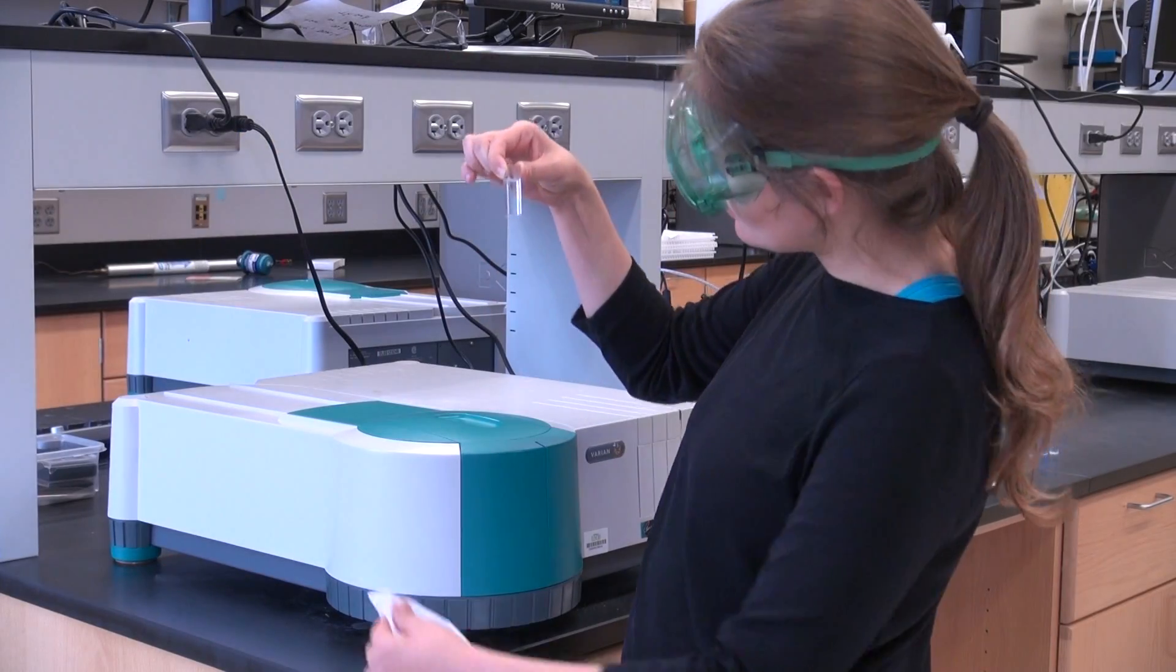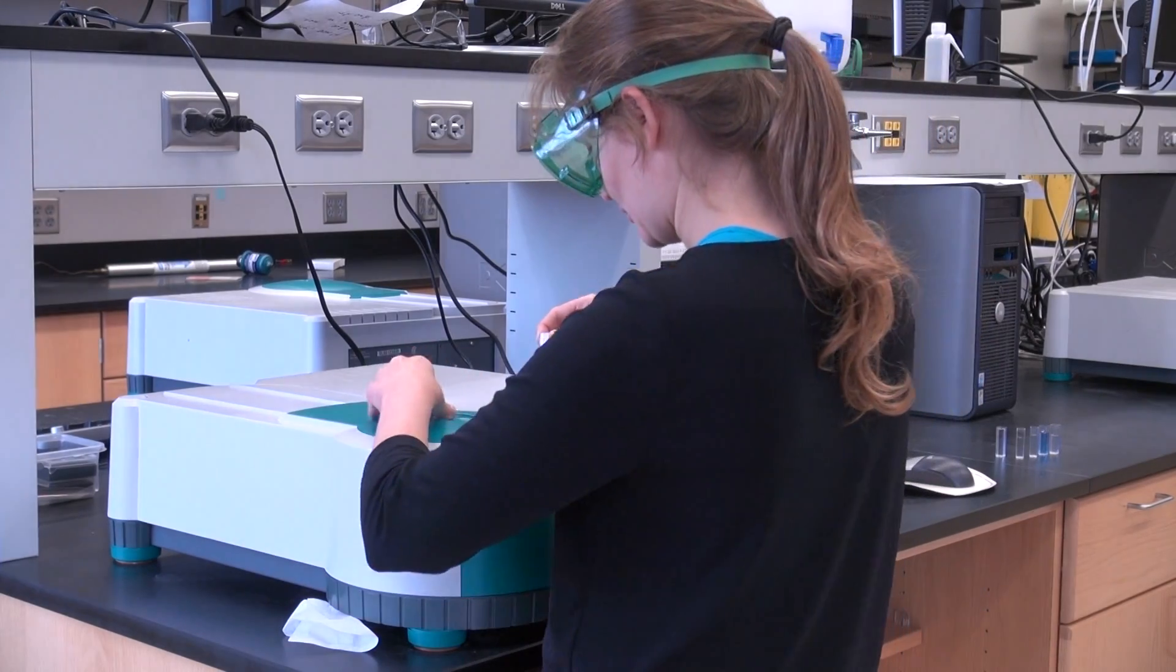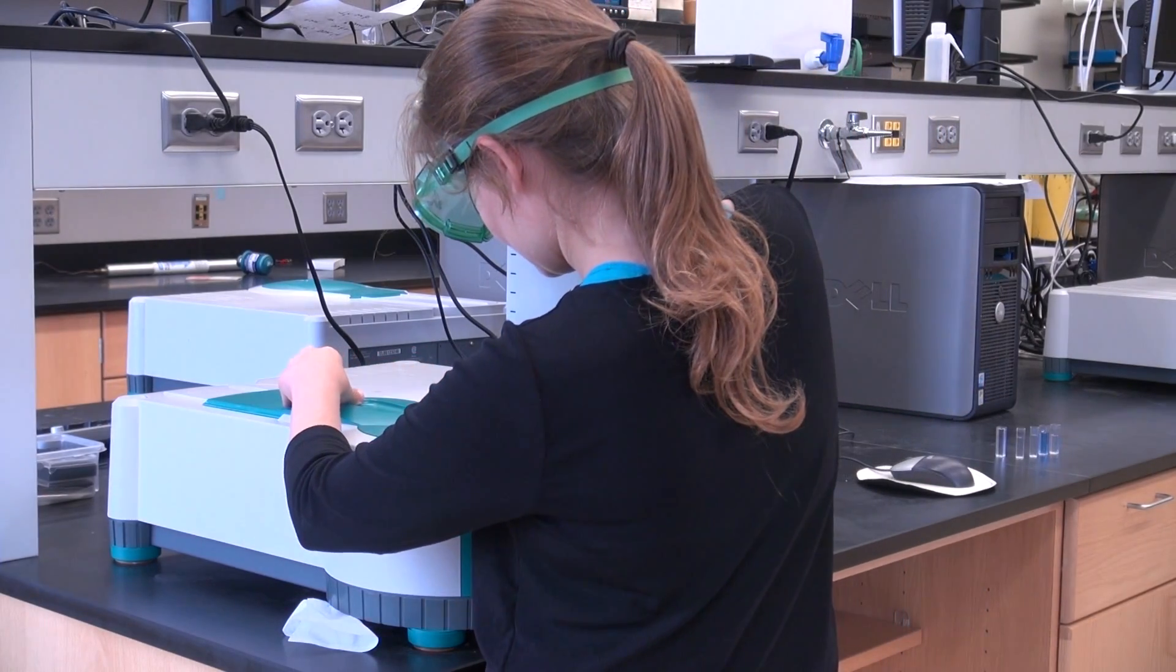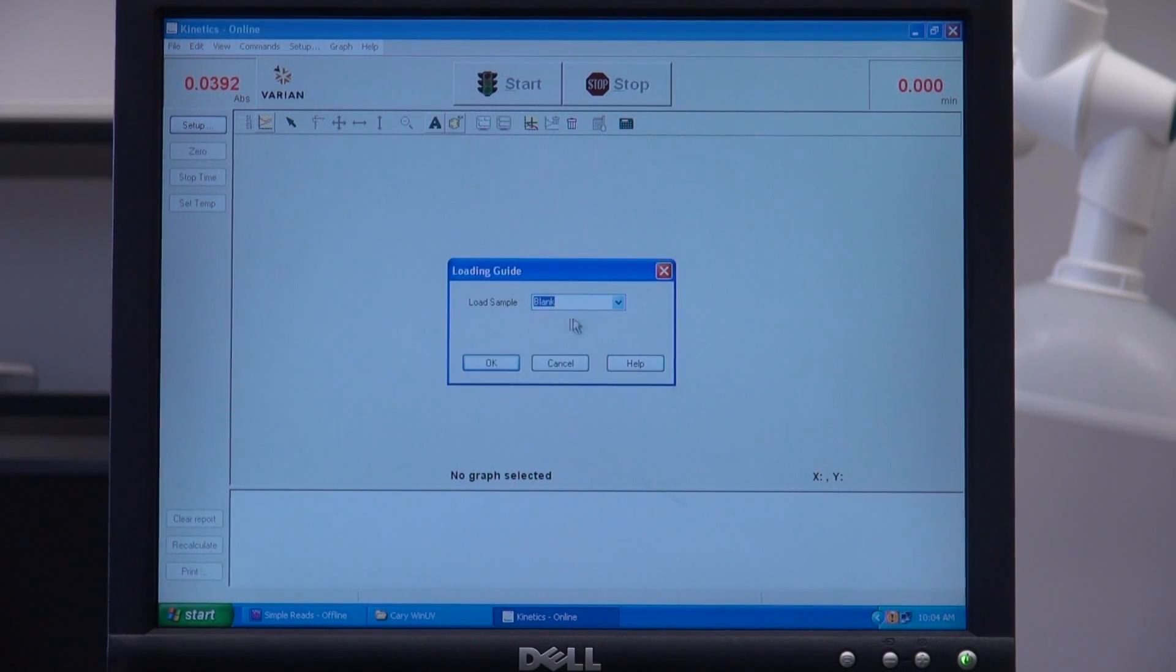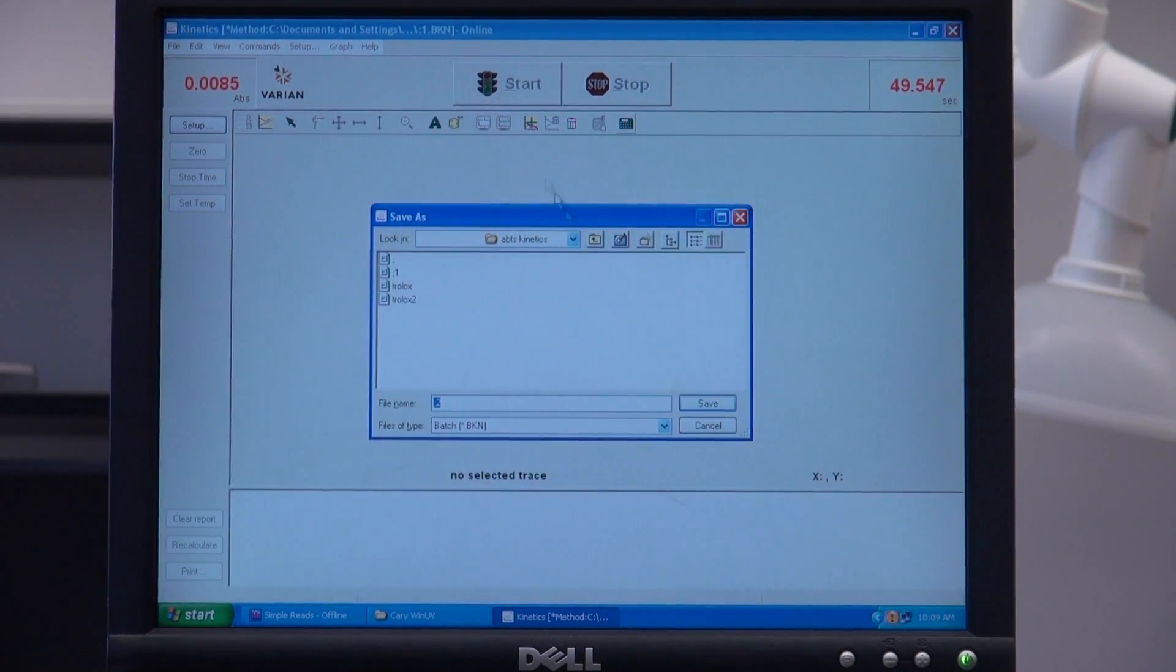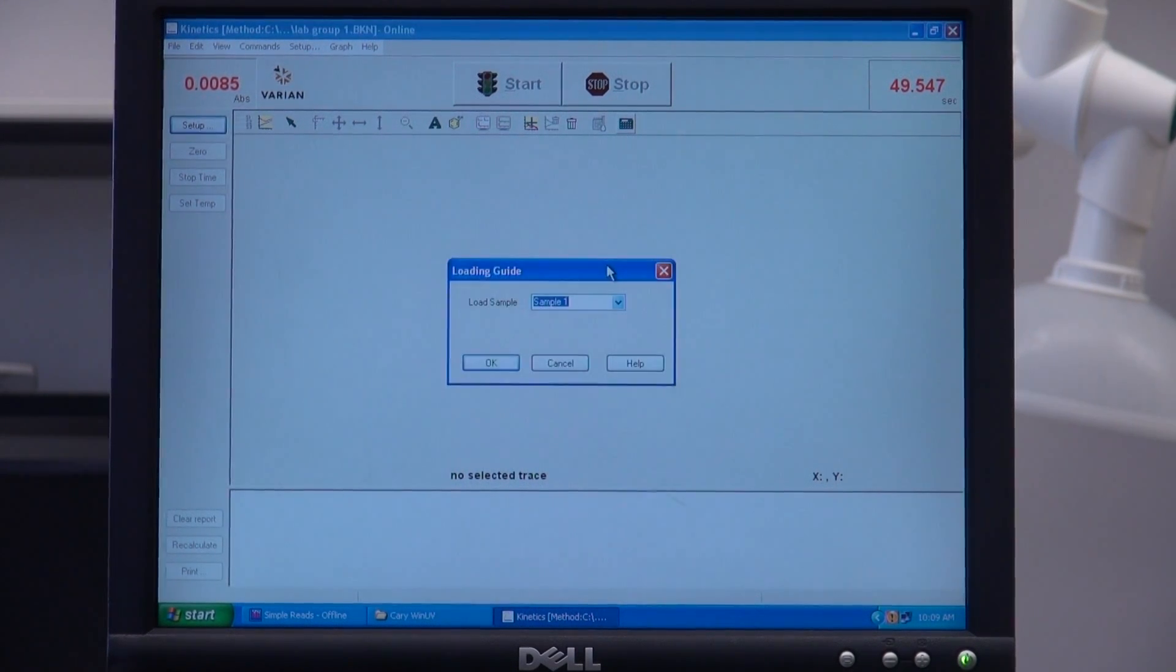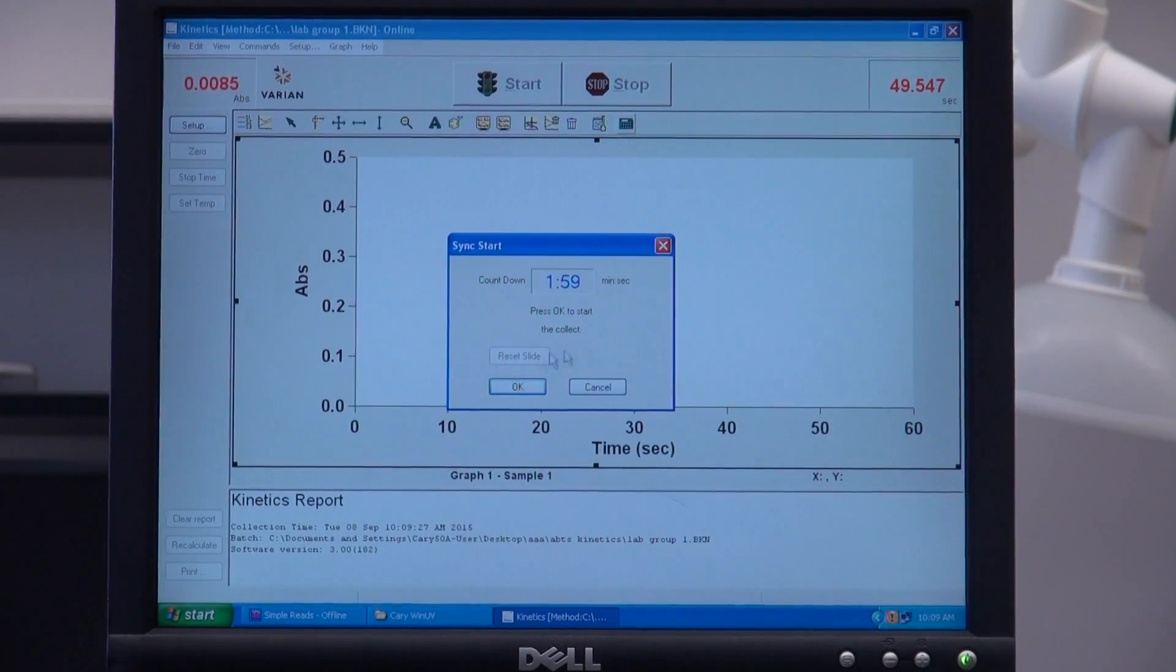You will use the sodium hydroxide solution as your blank to zero it before starting the experiment. It should say load sample. Press OK. Then press Start. You will name your file and press OK on the load sample again. A countdown for two minutes will now begin.